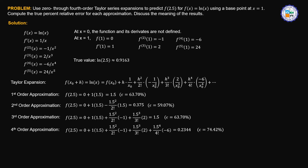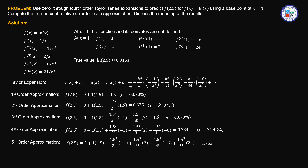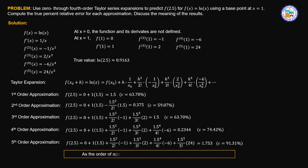The fourth order approximation gives a relative error of 74.42% — larger than the 63.7% from the first order. For comparison purposes, a fifth order approximation, although not required by the problem, gives a value of 1.753, and the relative error has ballooned to 91.31%. So what does this tell us? As the order of approximation is increased, the relative error diverges.